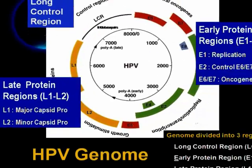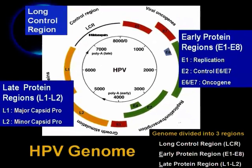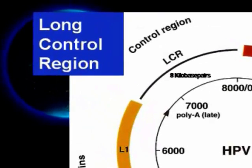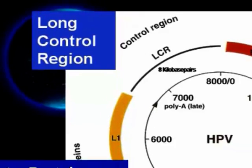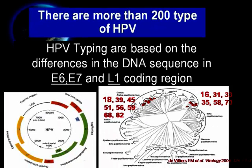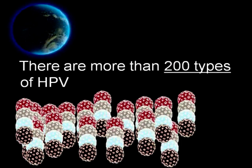The third region is called the Long Control Region or LCR, which has no coding potential. Based on differences in the sequence of the E6, E7, and L1 coding regions, there are currently more than 200 types of Human Papilloma Virus.